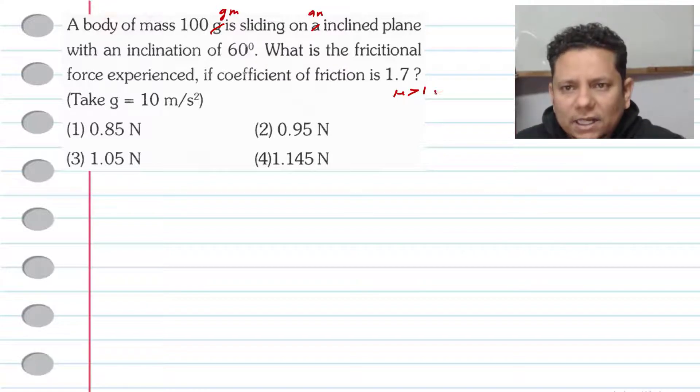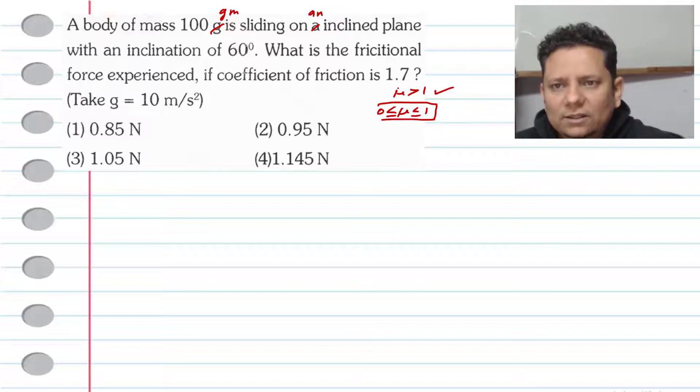In practical scenarios, mu can be more than 1. Usually we say that mu value exists between 0 and 1, but there are such materials that mu value can be more than 1. If it is more than 1, then we don't need to discard that mu value.